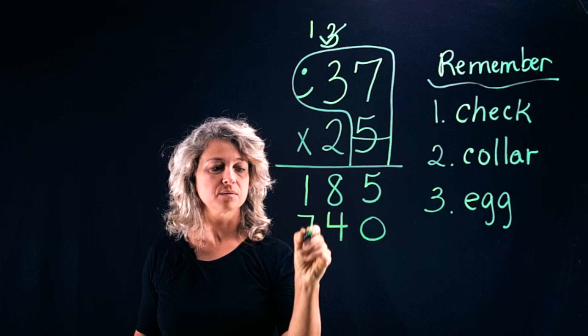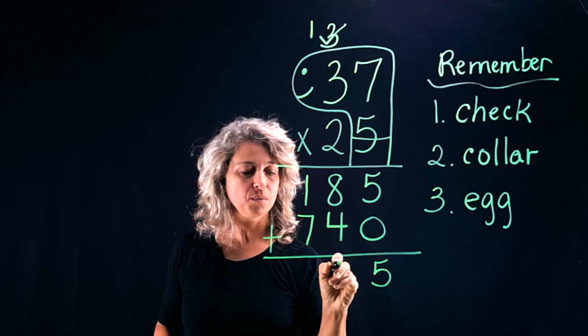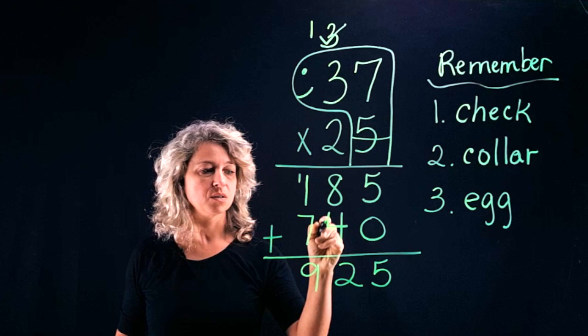Now the final step is to add. Five plus zero is five. Eight plus four is twelve, carry your one just like always. Seven plus one is eight, plus one more is nine. And your answer to your two-digit multiplication is 925.